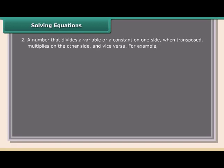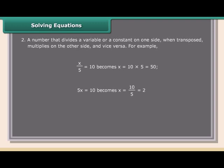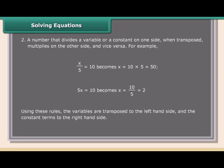Rule 2: A number that divides a variable or a constant on one side, when transposed, multiplies on the other side and vice versa. For example, x/5 = 10 becomes x = 10 × 5 = 50. And 5x = 10 becomes x = 10/5 = 2. Using these rules, variables are transposed to the left-hand side and constant terms to the right-hand side.